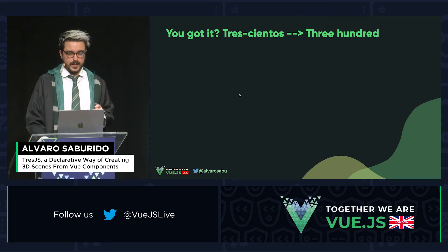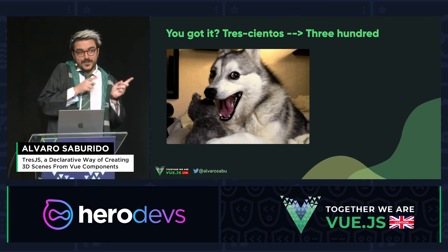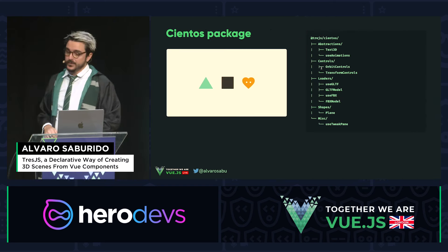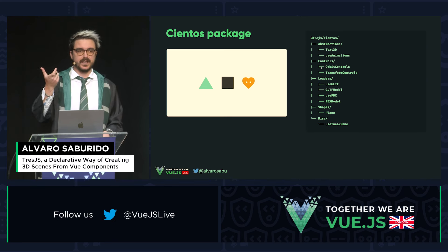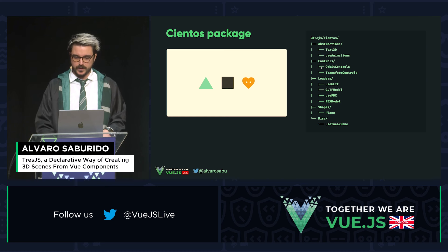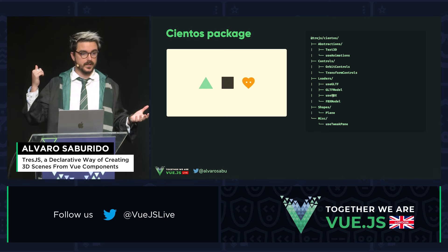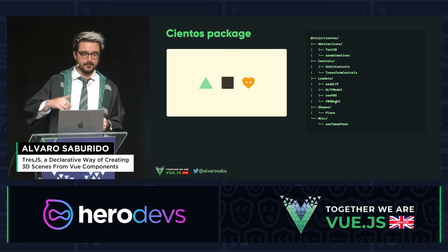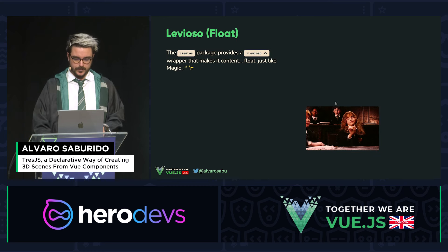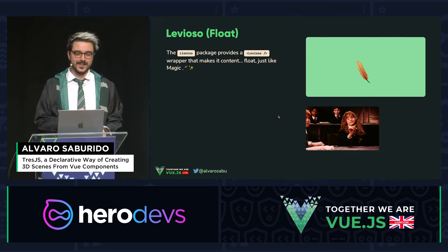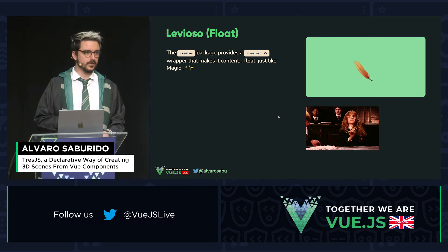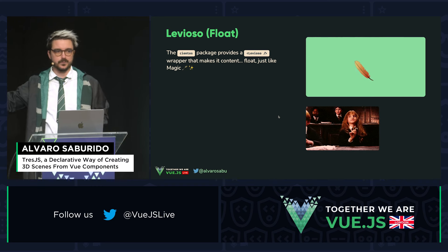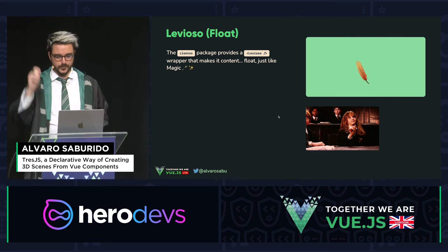A fun note: Tres Cientos is like 300 — I know it's a bad joke, sorry. Here are some of the abstractions in Cientos: Text3D for creating 3D text, animations, loading models like the one at the beginning using these composables. One of the abstractions, for example, is the Float component — also called Levioso — which allows you to float whatever you put inside it, like a feather floating, Hermione-style.